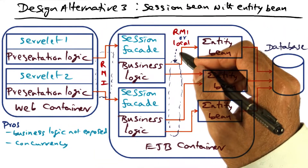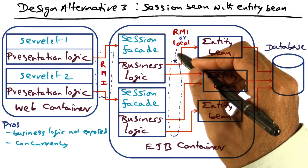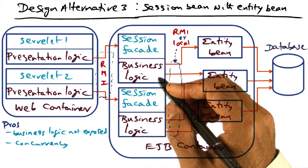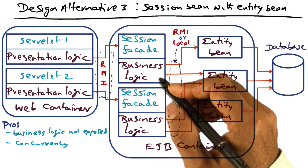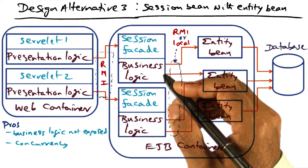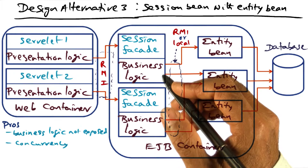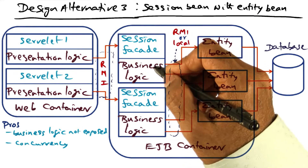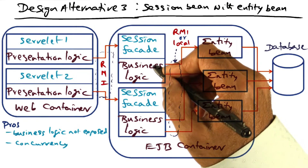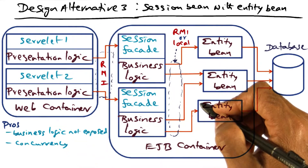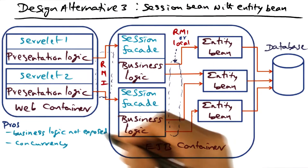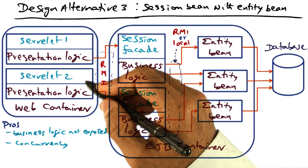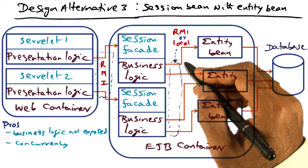Lots of things are needed in addition to the application logic itself, such as security and persistence. The power of object technology is that those things may be common across different instances of applications, so we can reuse them from one application to the other without reinventing them for every application. That's the power of object technology, and the key reason to use it for structuring these complex services.